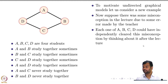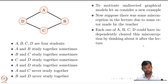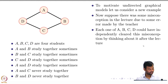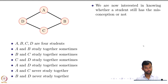What happens after that is that these students are also going to study together. Each of them independently thought about the problem and may or may not have cleared the misconception. But now when they study together, there is a further chance that if one of those students in the group had cleared the misconception, then maybe the other students' misconception would also be cleared, because hopefully that student passes on this information. We are interested in knowing whether each student still has the misconception — for all four students.